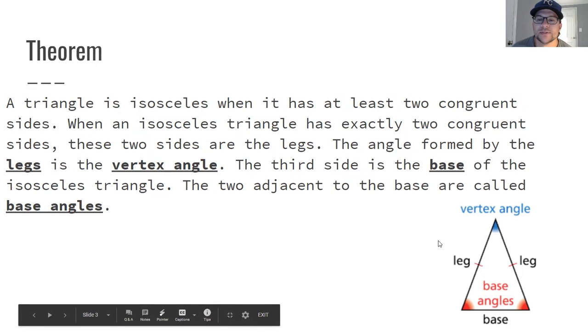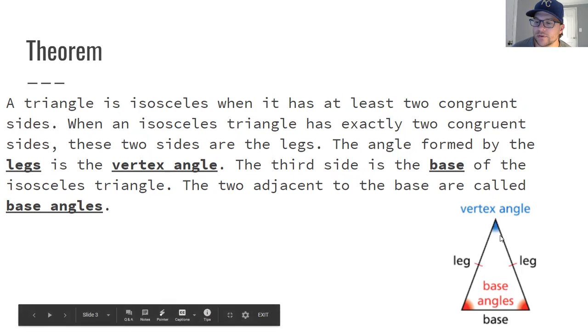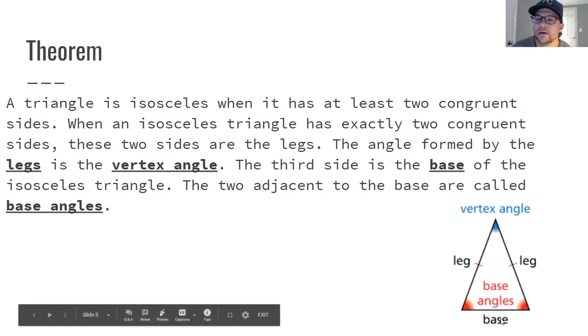The angles that are formed by the legs is called the vertex angle. So remember last time we talked about included angle. So the angle that is between your two legs or the angle that is touching both of the legs. This blue one right here is the vertex angle. Your third side is the base. That's the side that's not congruent to anything else. Or you could also think of it as the side that is opposite of the vertex angle.